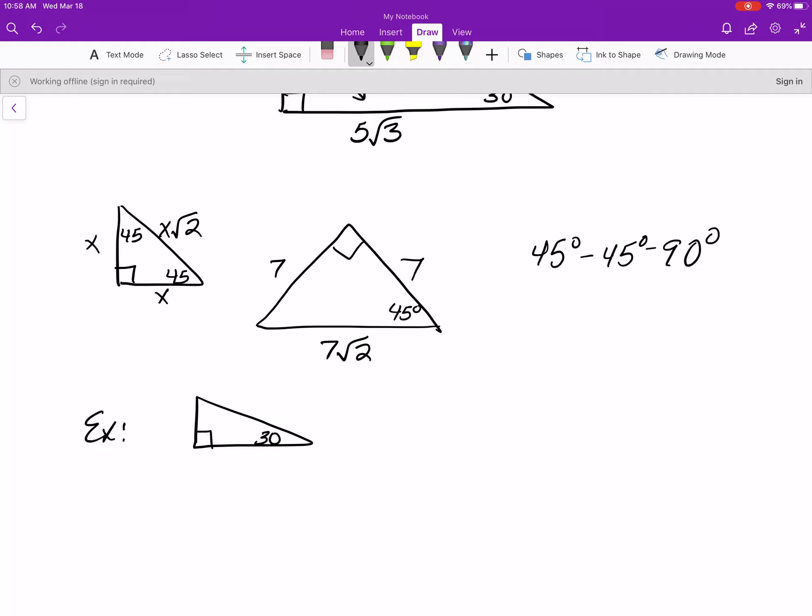So for example, let's say that we had this 30-60-90. And in that 30-60-90, let's say that we knew that this side right here was 12. Could we figure out how long the other sides were? Well, we could, because this is the side across from the 60 degree angle. And if we want to find the side across from the 30 degree angle, we need to divide by the square root of 3. So we would take 12, and we would divide it by the square root of 3.